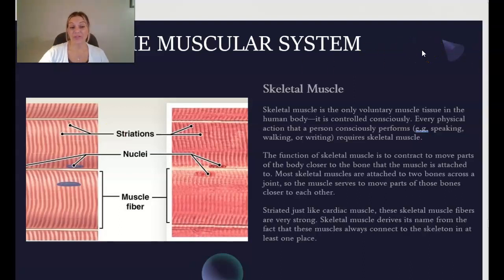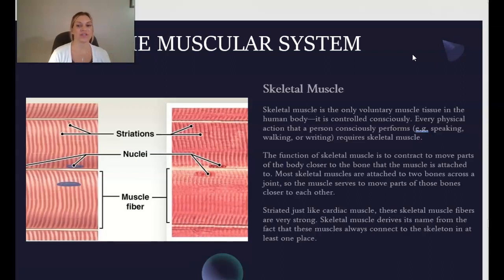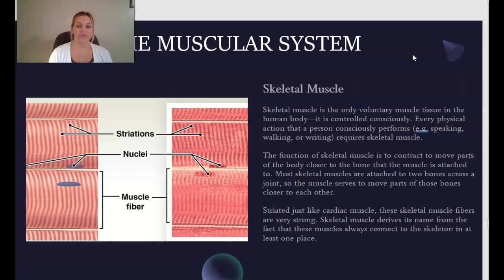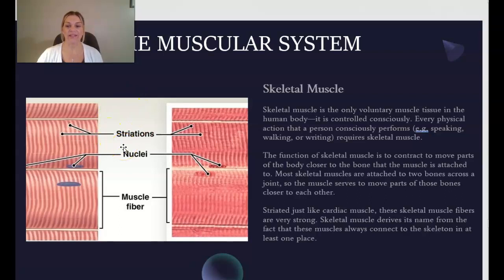Moving on to skeletal muscle. Skeletal muscle is the only voluntary muscle tissue in the human body, meaning it is controlled consciously. If you consciously decide to raise your arm, that physical action requires skeletal muscle. The function of skeletal muscle is to contract and move parts of the body closer to the bone that the muscle is attached to. Most skeletal muscles are attached to two bones across a joint so the muscle serves to move those bones closer to each other. Skeletal muscle is striated just like cardiac muscle, and skeletal muscle derives its name from the fact that these muscles always connect to the skeleton in at least one place.